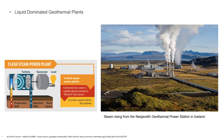In liquid-dominated plants, geothermal plants are built upon liquid reservoirs within the earth's surface. The liquid is sent through one or more separators to lower the pressure of the water, creating steam. This steam then propels a turbine generator, causing it to produce electricity. The steam is then condensed back into a liquid and placed back into the liquid reservoir it originated from. This type of geothermal plant is very common and provides a sustainable, reasonable form of energy. Liquid-dominated power plants are also referred to as flash steam power plants, as they conduct flash steam by pressurizing hot water from the surface of the earth. Each plant operates using water reservoirs with temperatures greater than 360 degrees Fahrenheit.